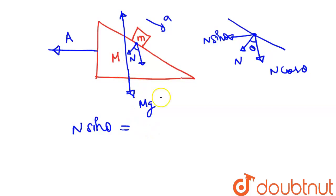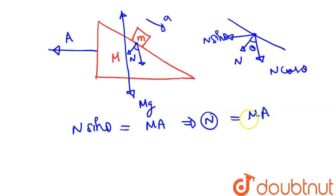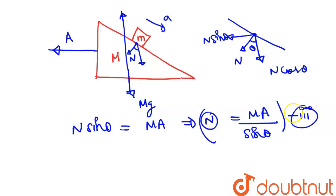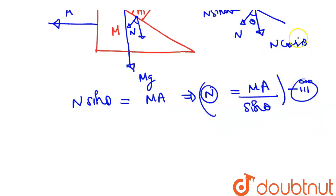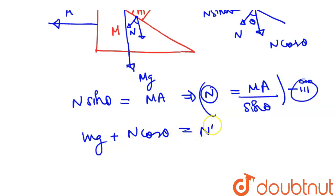So we have N sin theta equals capital M into A. That is equation 3. Also, Mg minus N-dash, and N cos theta: Mg plus N cos theta equals N-dash. That is equation 4. We now have all equations needed to solve.